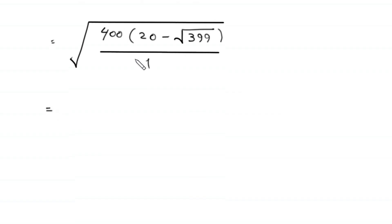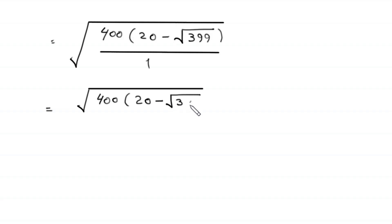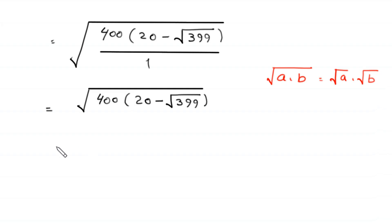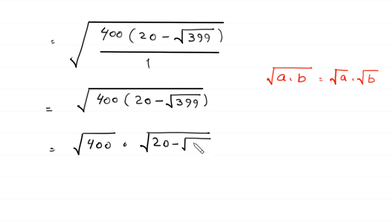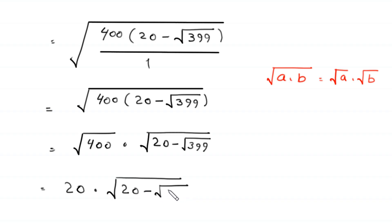The expression now becomes square root of 400 times 20 minus root 399. By using the property root of A times B equals root A times root B, this becomes root 400 times root of 20 minus root 399.